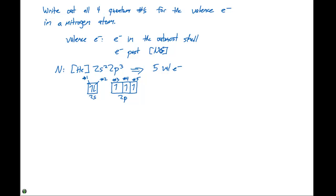We can write out the four quantum numbers: the principal quantum number, the azimuthal quantum number, the magnetic quantum number, and the spin quantum number. We need to write those out for electron number one, two, three, four, and five.